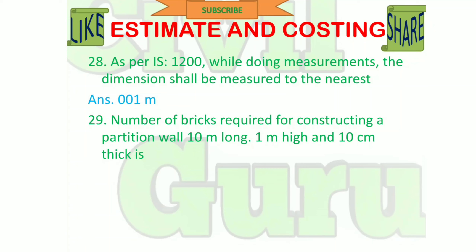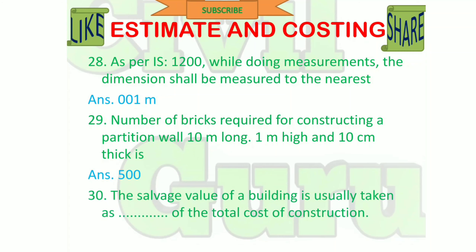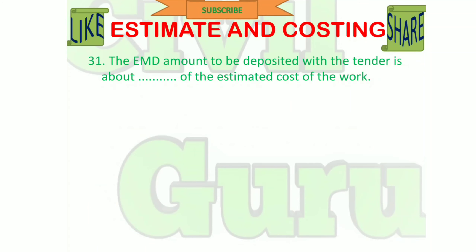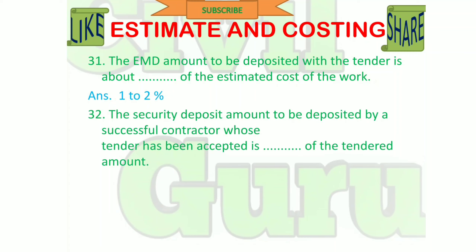Number of bricks required for constructing a partition wall 10 meters long, 1 meter height and 10 cm thick is 500. The salvage value of a building is usually taken as 10% of the total cost of construction. The EMD amount to be deposited with the tender is about 1 to 2% of the estimated cost of the work. The security deposit to be deposited by a successful contractor is 10% of the tender amount.